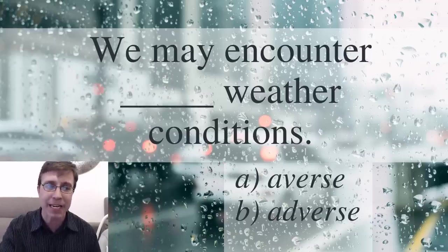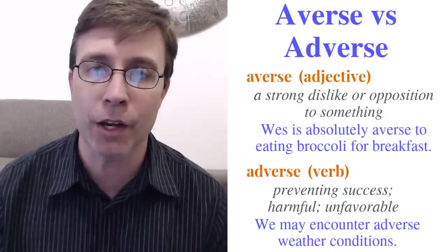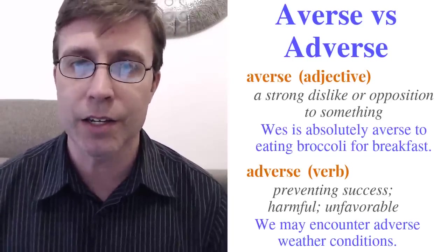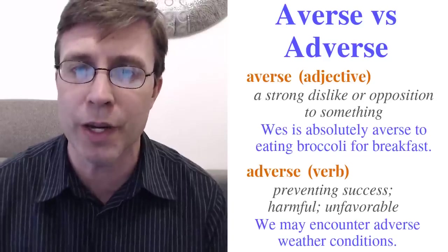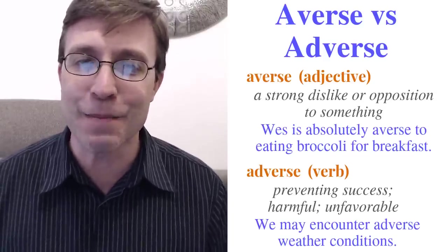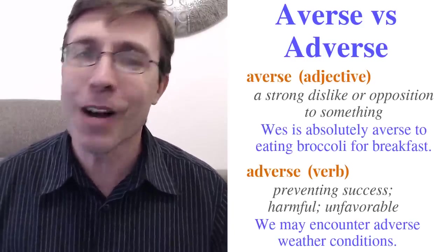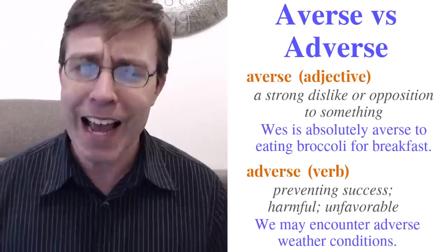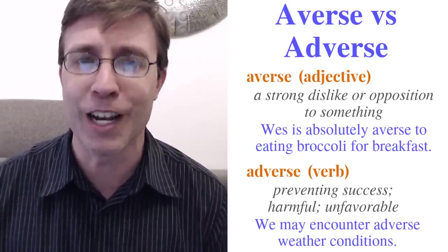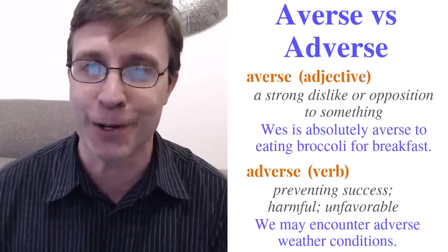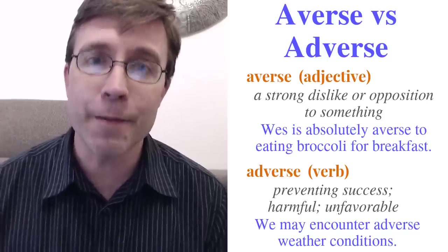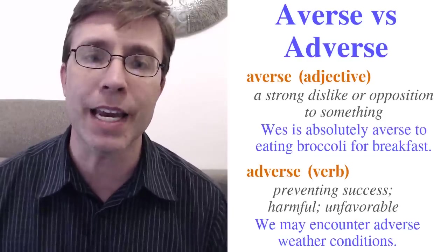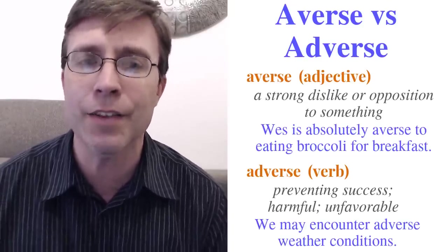The answer is B, adverse: 'We may encounter adverse weather conditions.' Their parts of speech are different. 'Averse' is an adjective meaning you have a strong dislike of or opposition to something. For example, 'Wes is absolutely averse to eating broccoli for breakfast' — I am opposed to eating it. Actually, I am averse to eating broccoli for lunch and dinner as well — I just don't like broccoli. If you listen to the pronunciation: 'averse' has a schwa at the beginning, while 'adverse' has more of a short A and a light D sound.